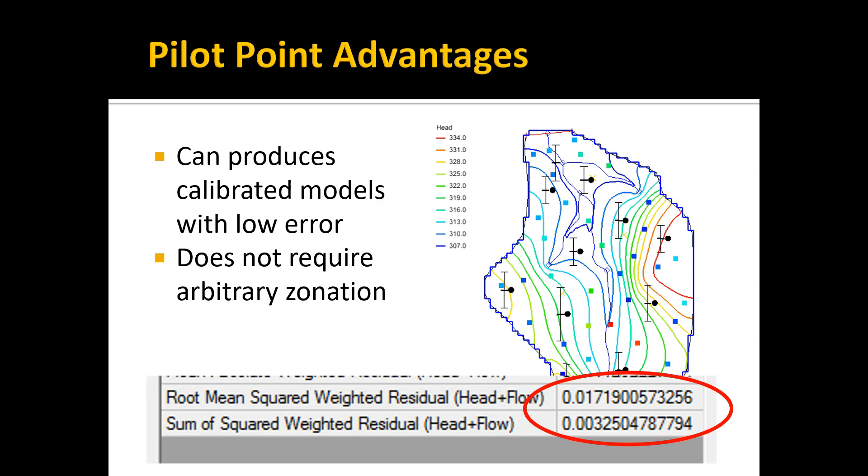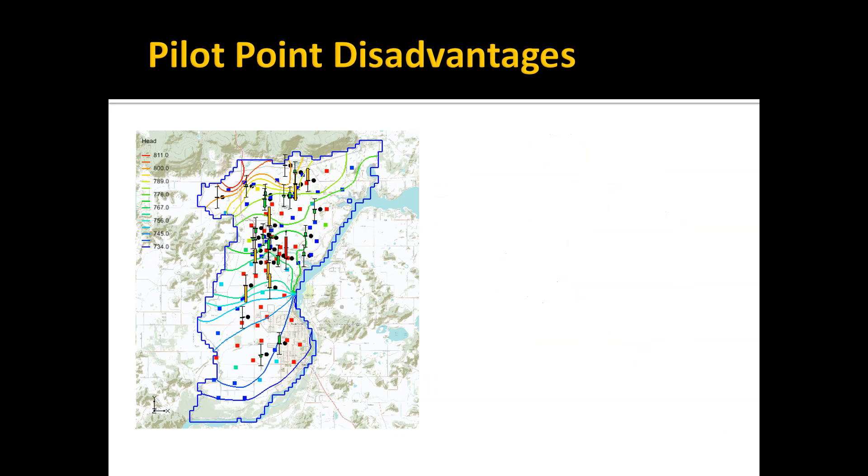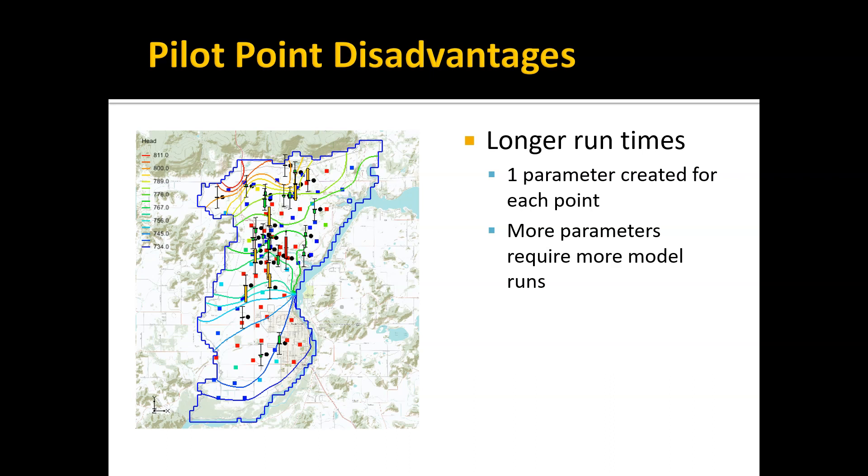There are some disadvantages to the pilot point method. It can result in very long run times. Basically, each of those pilot points is a separate parameter, and the more parameters you have, the more model runs are required at each PEST iteration. If I have, let's say, 50 pilot points, I have to run the model 50 times, or sometimes 100 times—sometimes it does it once for each parameter, sometimes twice—but at least 50 times for each PEST iteration, not to mention whatever other parameters I've defined.